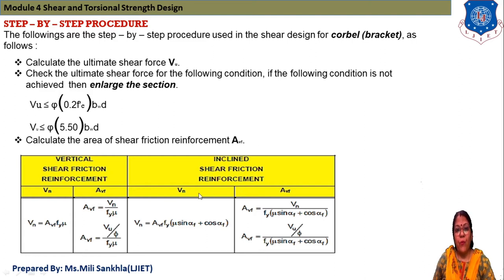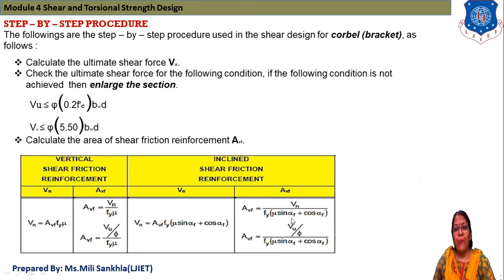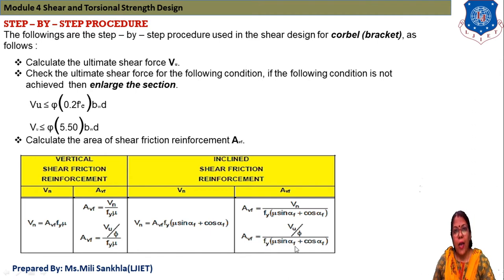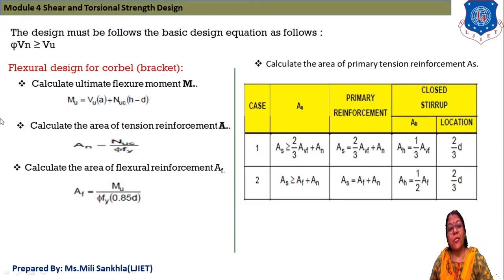For inclined shear friction, VN = AVF × Fy × (mu × sin(alphaF) + cos(alphaF)). Therefore, AVF = VU/phi divided by Fy × (mu × sin(alphaF) + cos(alphaF)). This is the equation for shear reinforcement AVF.